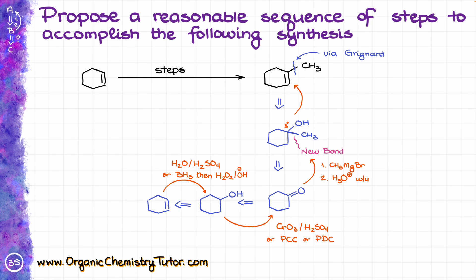To accomplish our last step, we are going to be making a double bond that is the more substituted double bond out of all possible ones. That is going to be a simple dehydration — we don't need to reinvent the wheel here. We can do a simple dehydration of alcohols in acidic media, treating our alcohol with something like sulfuric acid at high temperature to get our final product.